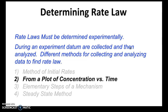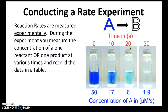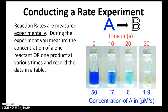The second method for determining the rate law is from a plot. Before we begin, let's talk about how we conduct a rate experiment. Say you have a reaction A going to B, where reactant A is a blue substance and product B is colorless. You can measure the change in concentration of A over time — as A reacts it disappears, so the solution becomes less and less blue.